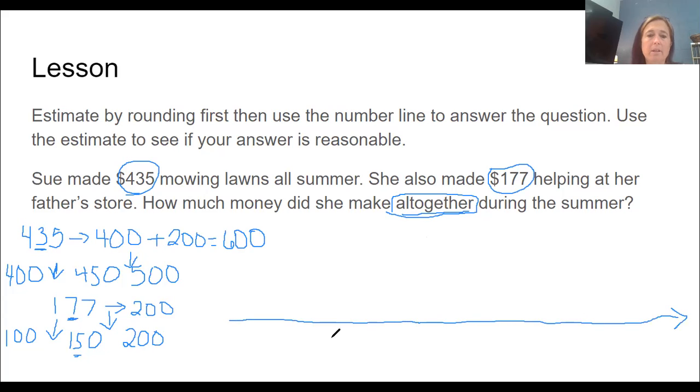Remember, this is an open number line. So we can start it and end it wherever we like. I'm going to start mine with 435 because that way I have less that I need to add together. And remember, this is money, but it doesn't change how we work out the problem. So if I'm starting at 435, I now have to add 177.